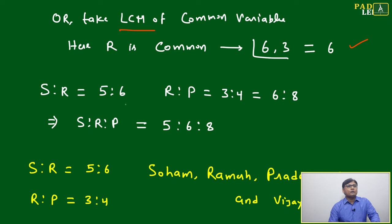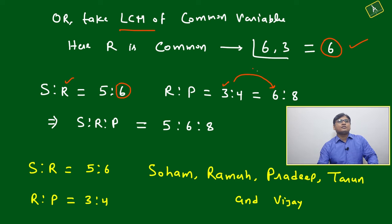S:R = 5:6, R:P is 3:4. To convert both numbers in terms of LCM - Ramesh is already 6, no need to convert. R:P is actually 3, you have to convert to 6 by multiplying by 2.